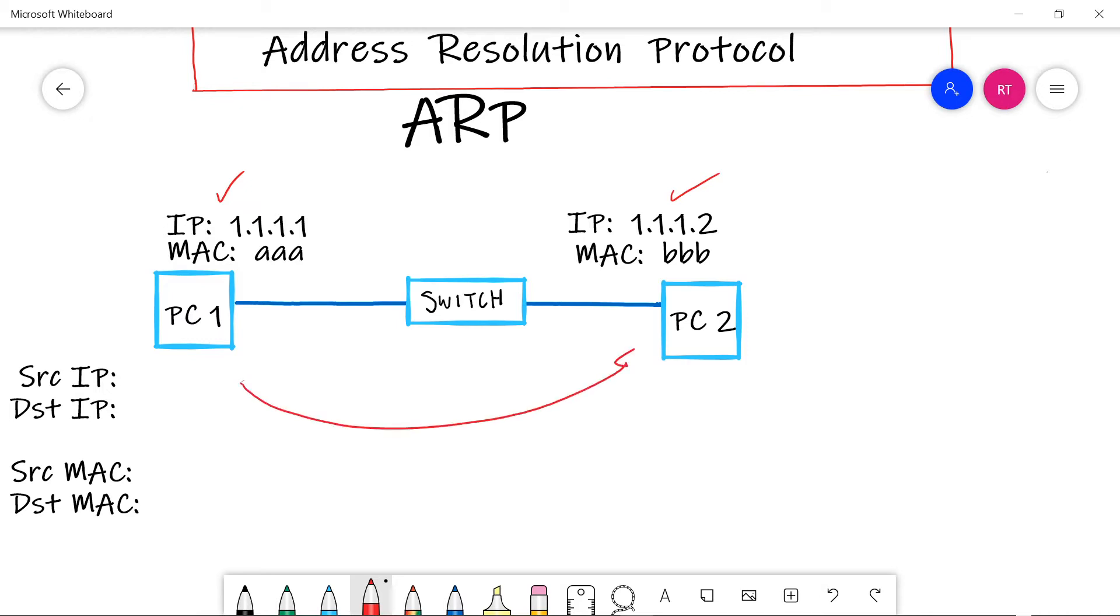So PC one wants to send data over to PC two. So we know that it's going to take the data and it's going to put an IPv4 header on it. The source IP inside the IPv4 header is going to be the IP of PC one. So 1.1.1.1. The destination IP is going to be the IP of PC two, which is 1.1.1.2. We're going to take that IP header and the data and we're going to put it inside of an ethernet frame. So the source MAC address on the ethernet frame is going to be the MAC address of PC one. The destination MAC address should be the MAC address of PC two. But at this point, PC one does not know about it.